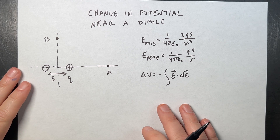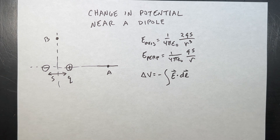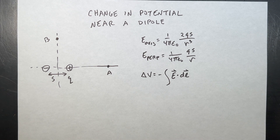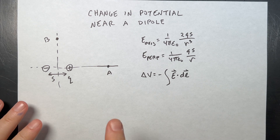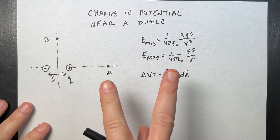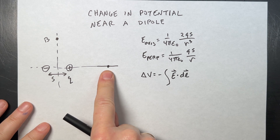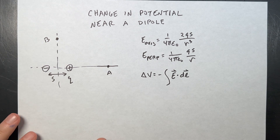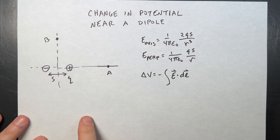Let's do a physics problem — one I kind of made up, but I think it will help us understand the relationship between electric field and change in electric potential. The basic idea is to calculate the change in potential going from point A to point B near an electric dipole, and I want to do this two different ways.